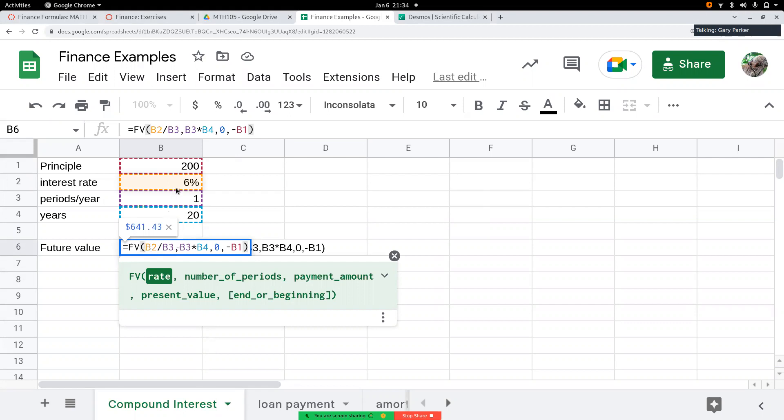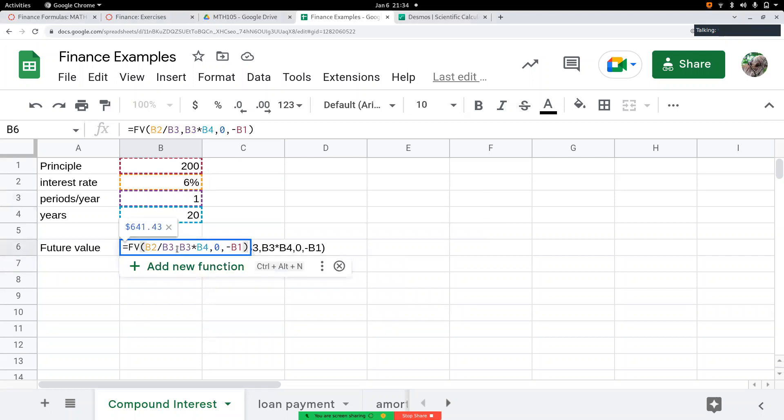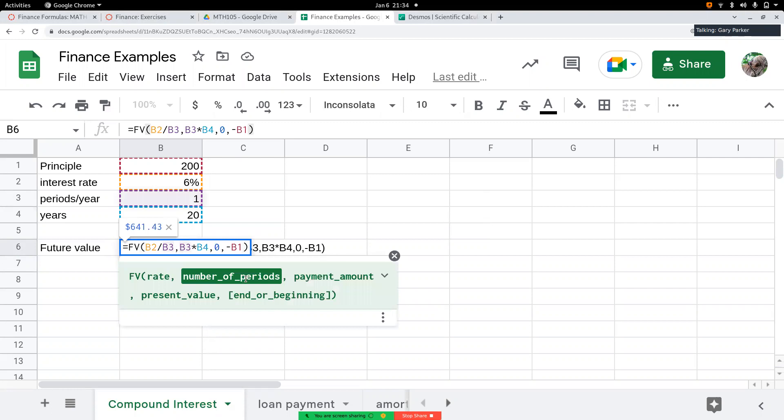So that's the B2, the interest rate, divided by B3, compounding period. The next thing it wants to know is how many periods there are total. That's always going to be the periods per year times the number of years. In this case, that's B3 times B4.